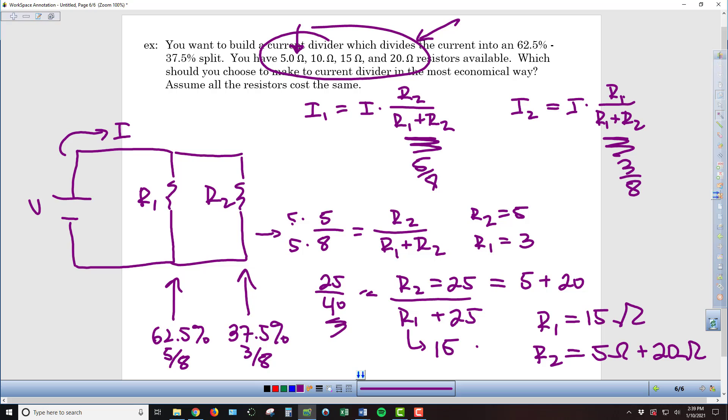And so that means that one resistor here, 15 ohms. And then if we have those two resistors that make up R2 to give us a 25 ohm resistance here, means that we'll get the desired 62.5%, 37.5% split.